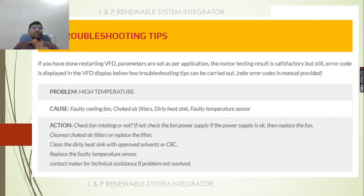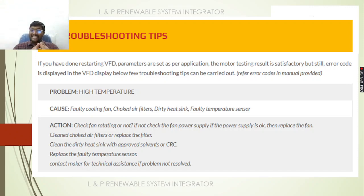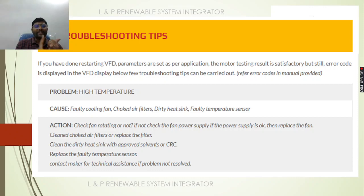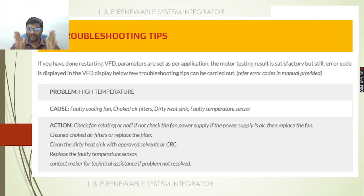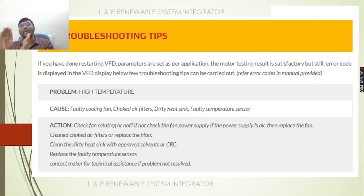Now we are going to see some troubleshooting tips. First and foremost, in the VFD, we often face a problem called high temperature. What will cause this high temperature? There is a possibility for a cooling fan to get faulty, choked air filters, dirty heat sinks, and faulty temperature sensors. The action we need to take: first, check whether the fan is rotating — if not, check the fan power supply; if the power supply is okay, replace the fan. Check whether the air filters are clean — if not, replace them. Check the heat sink and clean it with approved solvent. If there is any faulty temperature sensor, try to replace it. If the issue is not yet resolved after all these actions, it is better to contact the technical person.